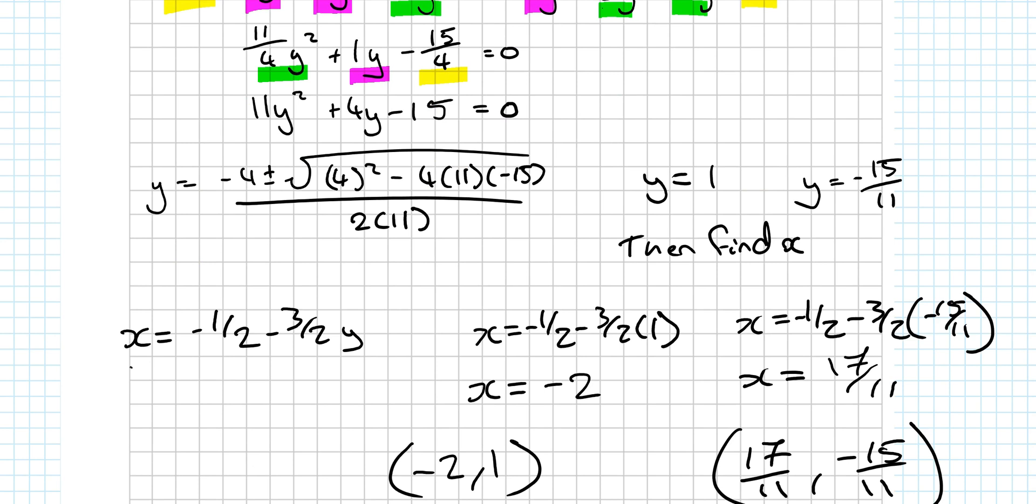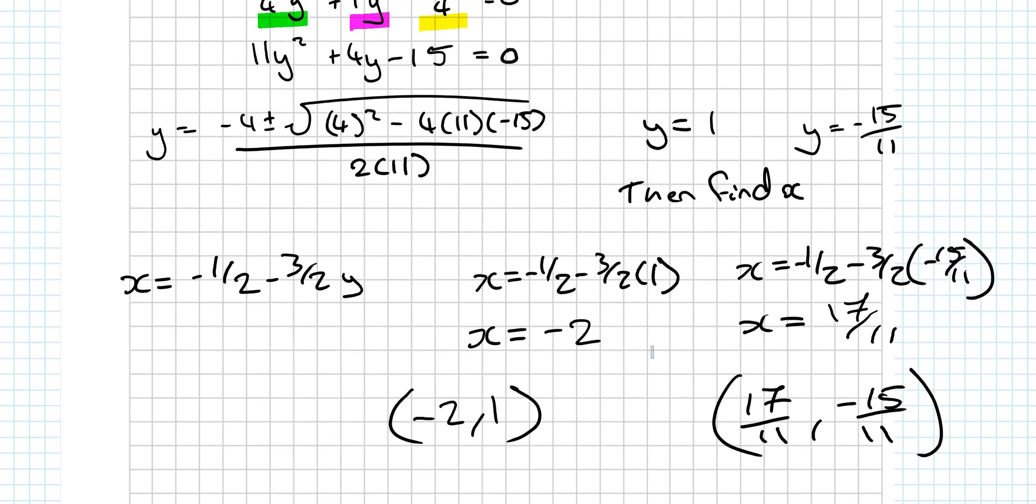You have x on its own already. See? I have x on its own already. All you need to do is sub in the 1 in here. The minus 15 over 11 in here. And you get two answers for your x as well. Finish by leaving them as points. x and y. If the question had variables s and t or any other thing like that, I probably wouldn't leave it as a point. But with x and y, it's very common to actually just leave it as a point as your answer.